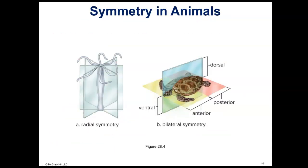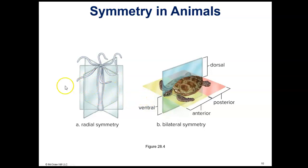As far as symmetry in animals, you have radial symmetry here in this cnidarian. This is the body form of, for example, a sea anemone or a hydra — they're both in the same phylum as a jellyfish, but the tentacles are facing up instead of facing down like they do in a jellyfish. You can see with the dividers placed here that there are many ways to cut the animal and get equal halves, so that's radial symmetry.